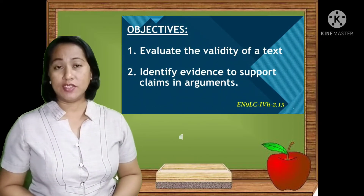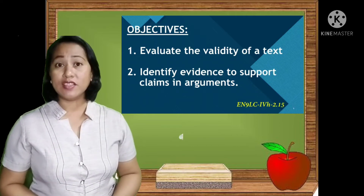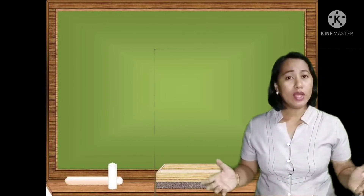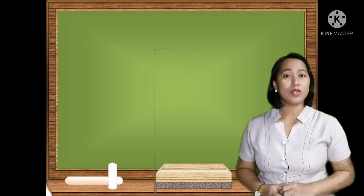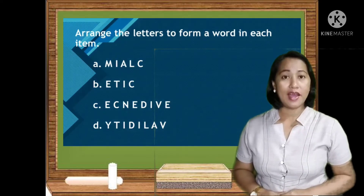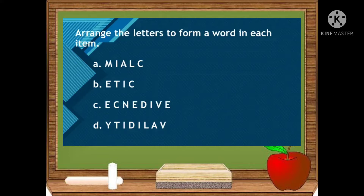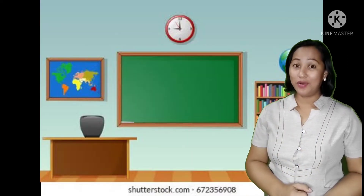Our objectives for today's lesson are: first, to evaluate the validity of a text, and second, to identify evidence to support claims. But the problem is, how can we judge the validity of a text? To answer that, I would like to show you jumbled letter words and your task is to arrange them to form a word. Now let us check if you got the correct words.